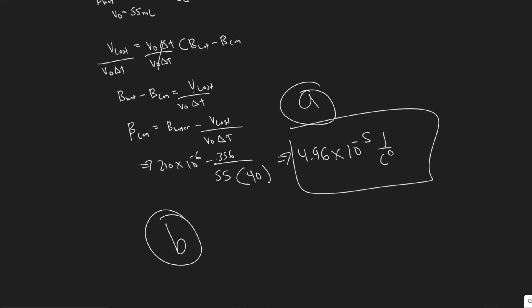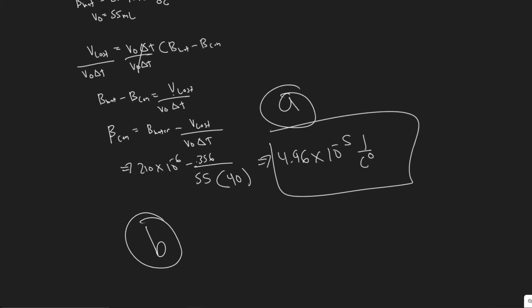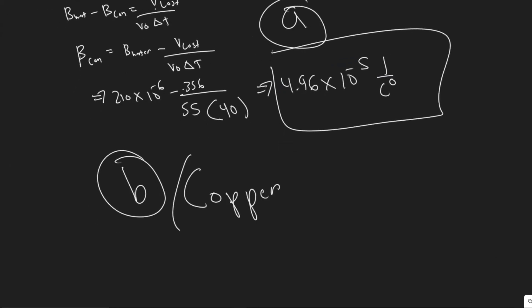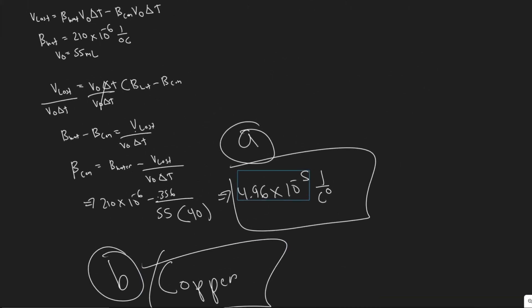For part B, they want us to determine the material of the container. You would determine this by looking at the coefficient of volume expansion for all materials in the textbook. Looking at them, it should be pretty obvious — it's going to be copper. Copper in the book is 50 times 10 to the minus 6, which is the same as 5 times 10 to the minus 5, matching our answer.